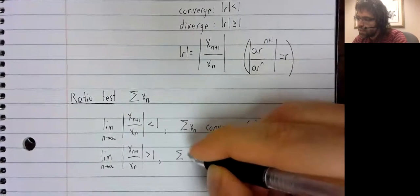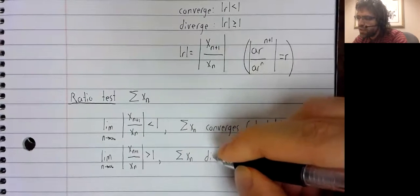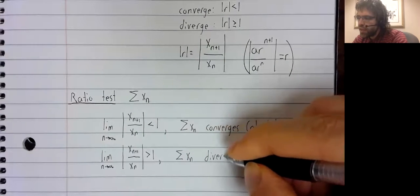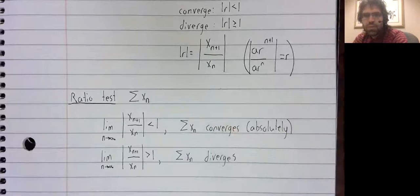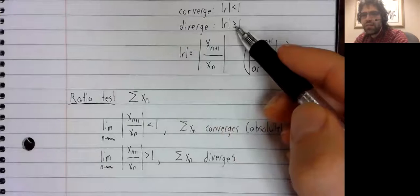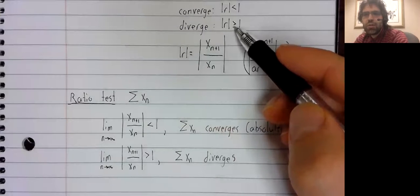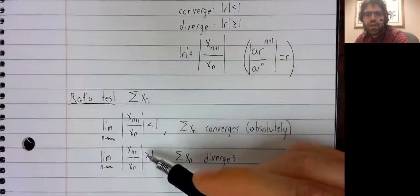the series diverges. But notice a difference. With geometric series, this inequality is greater than or equal to. Here, the inequality is strict.